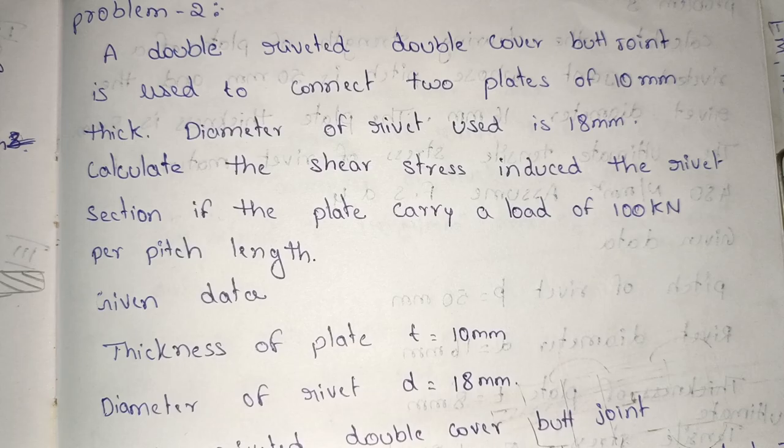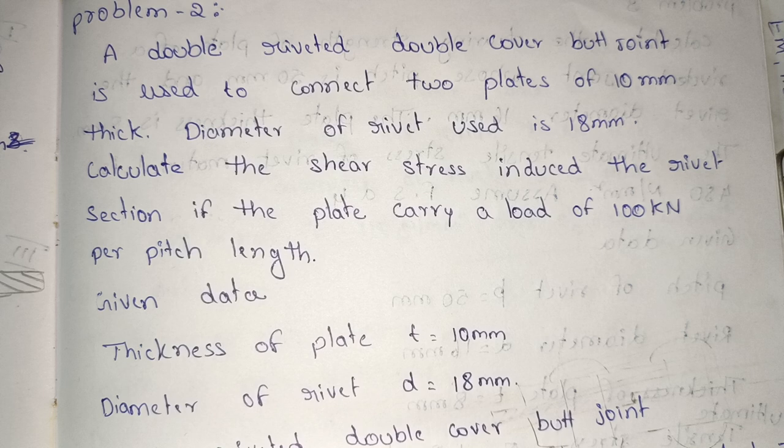Problem statement: A double riveted double cover butt joint is used to connect two plates of 10 mm thick. Diameter of the rivet used is 18 mm. Calculate the shear stress induced in the rivet section if the plate carries a load of 100 kilonewtons per pitch length.